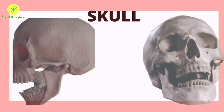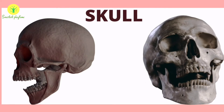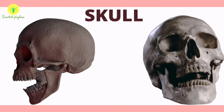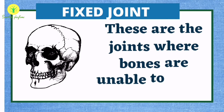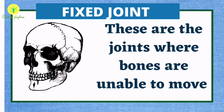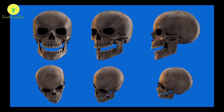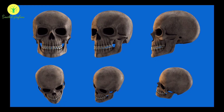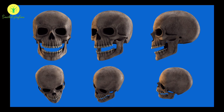Some joints between bones in our head are different from those we have discussed so far. The bones cannot move at these joints. Such joints are called fixed joints. We can move the lower jaw away from the head, but that is not the case with the upper jaw. There is a joint between the upper jaw and the rest of the head, which is a fixed joint.